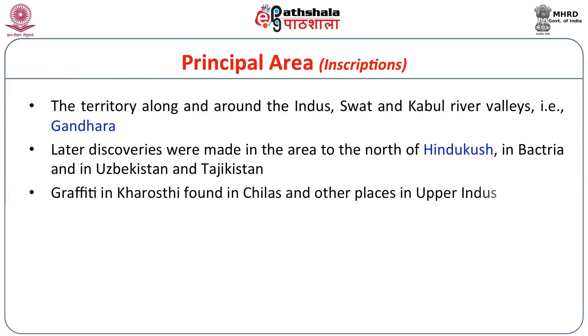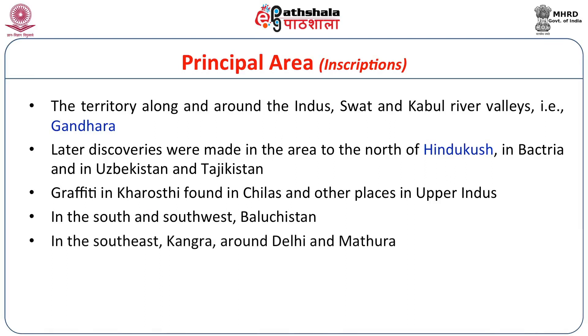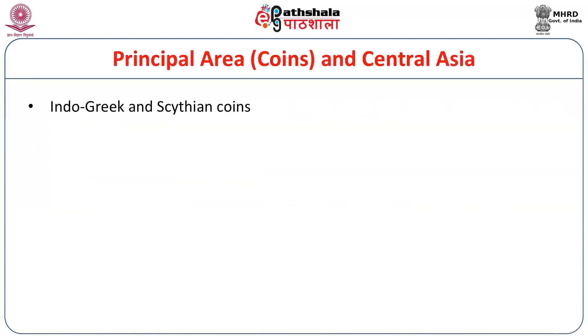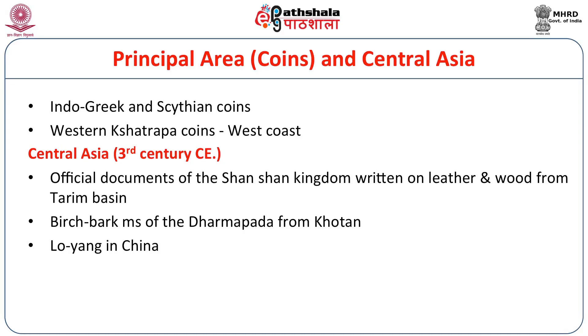The principal area of Kharosthi inscriptions is along and around the Indus, Swat, and Kabul river valleys in the Gandhara kingdom. Later discoveries were made north of the Hindukush in Bactria, Uzbekistan, and Tajikistan. Graffiti in Kharosthi is found at Chilas and other upper Indus sites. Coins in Kharosthi were issued by Indo-Greek, Scythian, and western Kshatrapa rulers. In Central Asia, it was used for manuscripts rather than inscriptions.